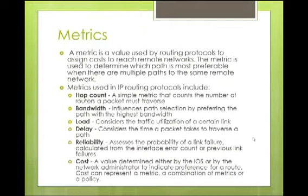Metrics are a value used by routing protocols to assign a cost to reach a remote network. The metric is used to determine which path is most preferable when there are multiple paths to the same remote network. Some different metrics that can be used are hop count (used for RIP), bandwidth, load, delay, reliability, and cost. Different metrics are used for different routing protocols, and when we discuss each individual protocol, we'll discuss what the metric is.